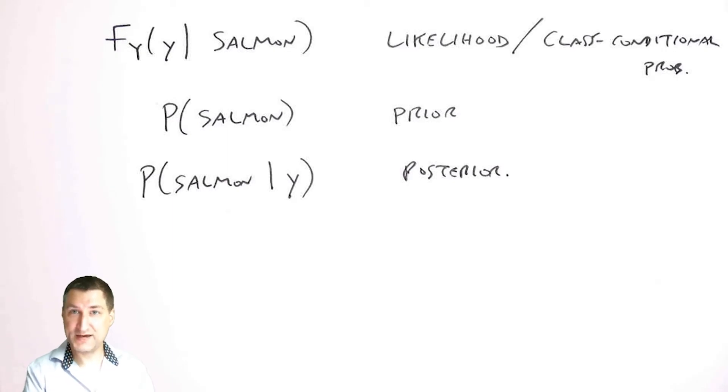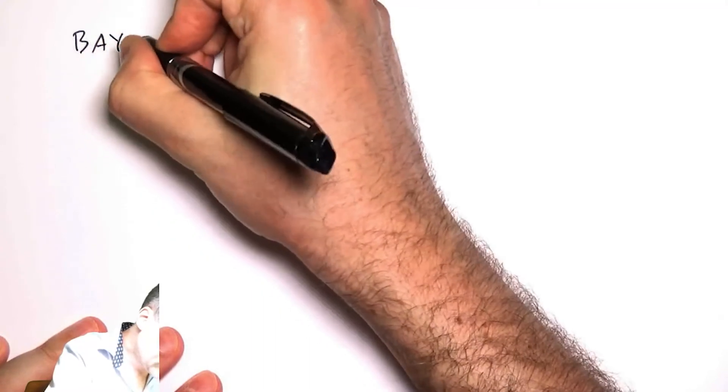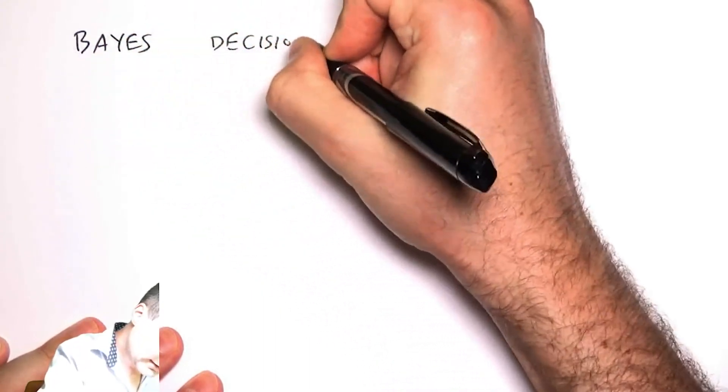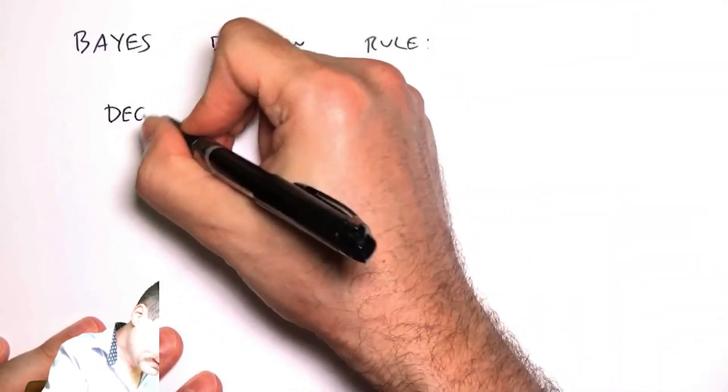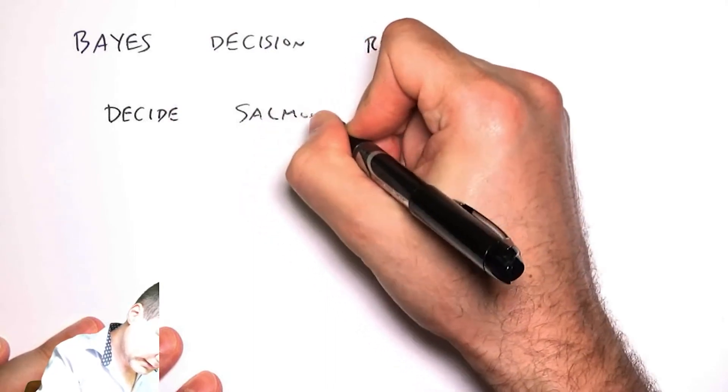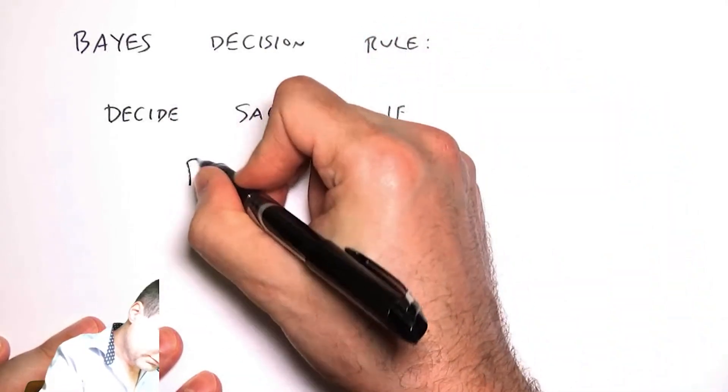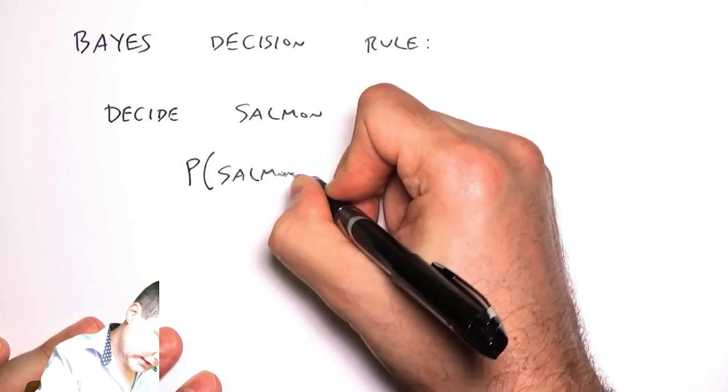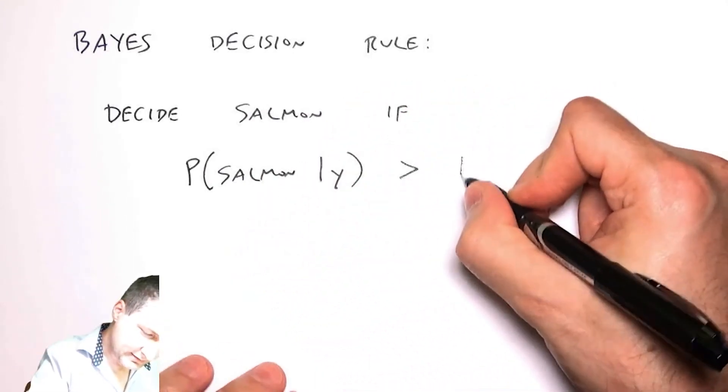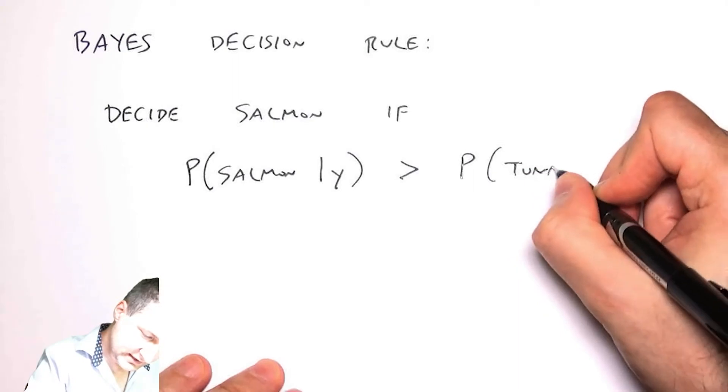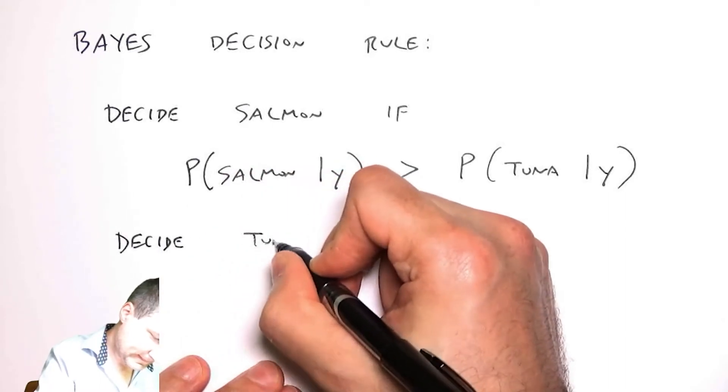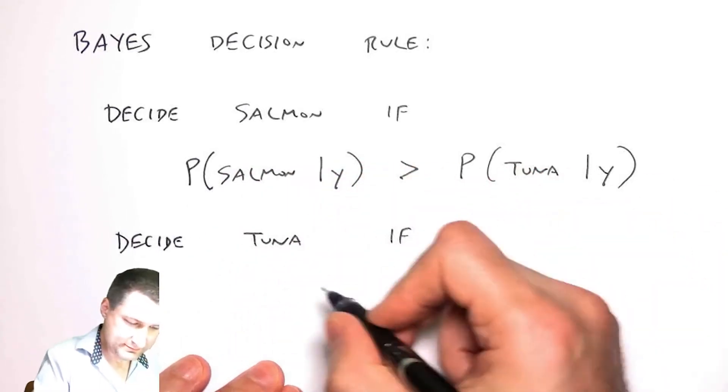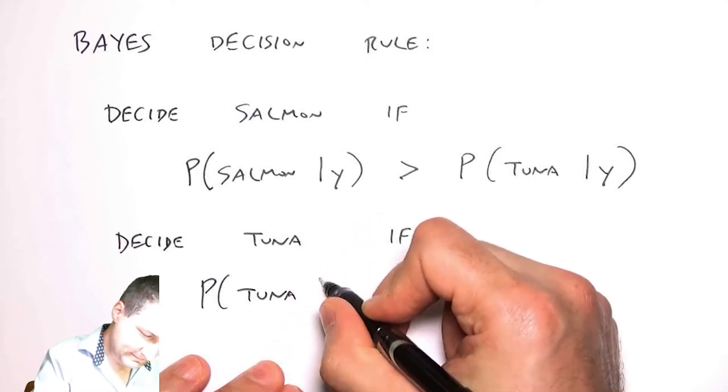This leads to what's called the Bayes decision rule for making that decision. The Bayes decision rule is pretty obvious. It says I decide it's salmon if the probability of salmon given y is greater than the probability of tuna given y, and I decide tuna if the reverse is true. If they're equal, then I flip a coin, doesn't matter.